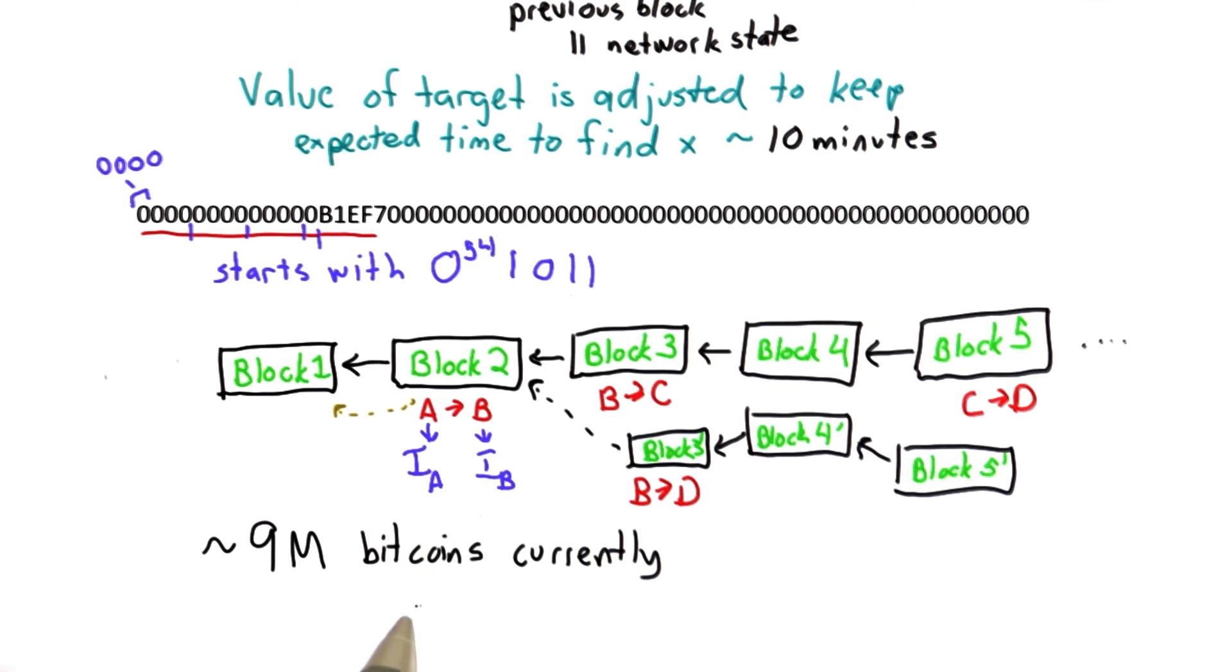There's about 9 million bitcoins currently available. The market price fluctuates and depends on the cost of computation as well as the trust in the bitcoin network. There have been some incidents where the price fluctuated wildly because of concerns about the security of the bitcoin transaction site, but the current market is fairly stable around $5 for a bitcoin.